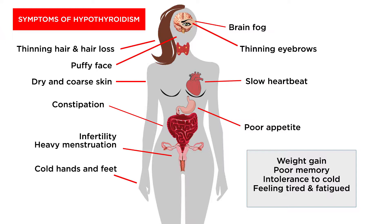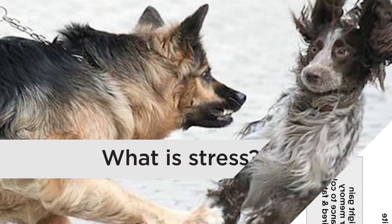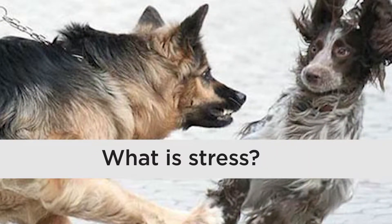When T3 and T4 are low or don't work, we develop feelings of being tired and fatigued, thinning hair and hair loss, a puffy face, dry coarse skin, constipation, infertility complaints, and heavy menstruation. Of course, cold hands and feet are also common, which brings us into the topic of stress.